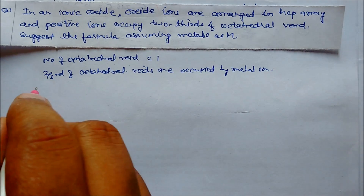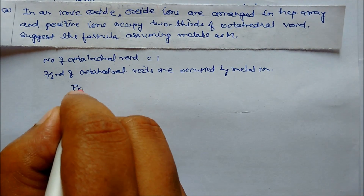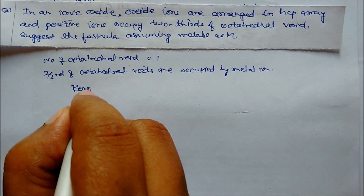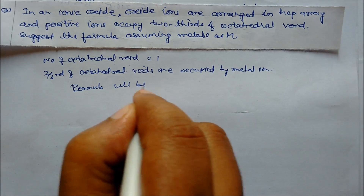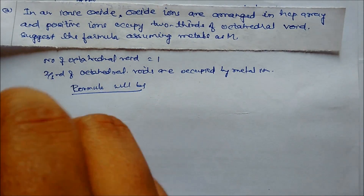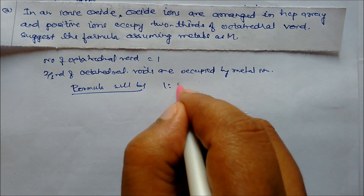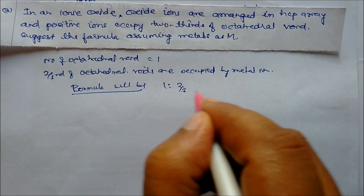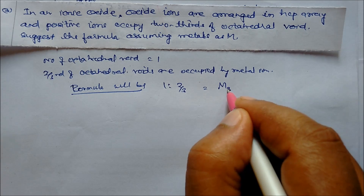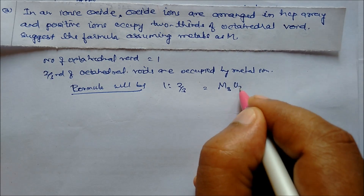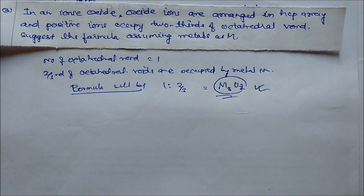So the formula will be: metal M to oxide O ratio is 2/3 to 1, or M₂O₃. This is our answer.